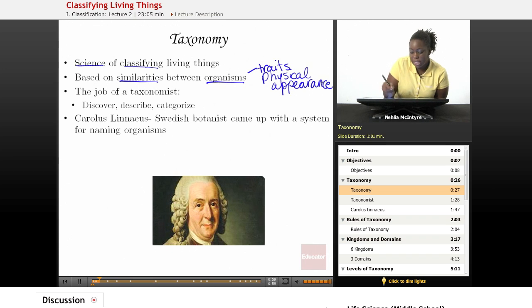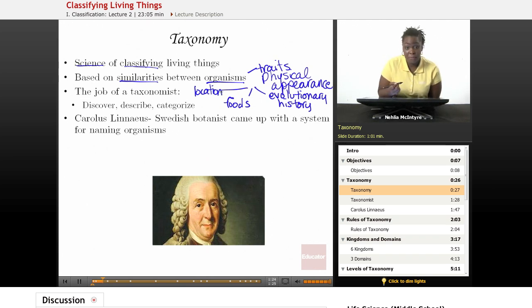That means their similarities could be based upon their traits or how they look physically. It could also be based on things like their evolutionary history, meaning where did that organism come from? Do they have a common ancestor? It could be based upon their lifestyle, what foods they eat, the location of where they primarily live. So taxonomy takes into account several different factors when we are classifying organisms.